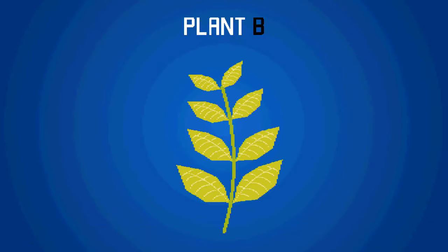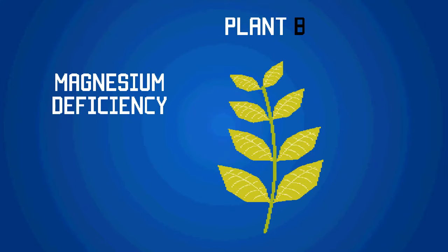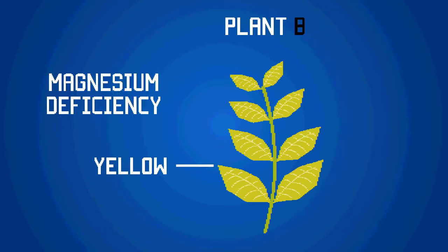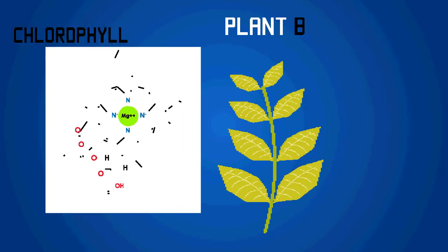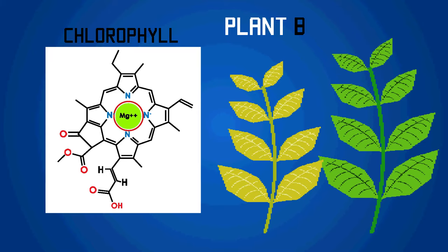Take a look at poor Plant B. This plant has a magnesium deficiency. As you can see, it is yellow. This is because magnesium is needed to make chlorophyll, the green pigment that absorbs light in chloroplasts. As this plant does not have enough chlorophyll, its growth will be limited as it will do less photosynthesis.